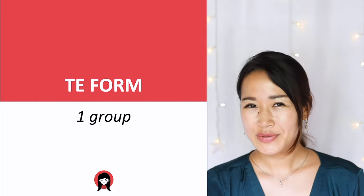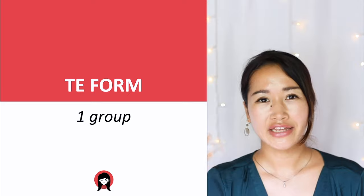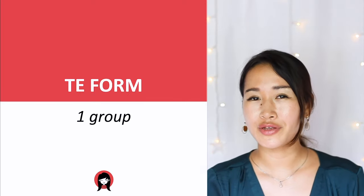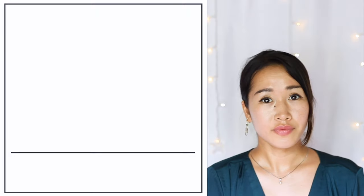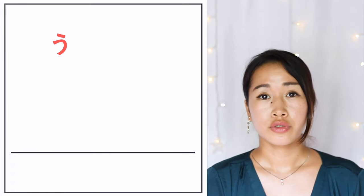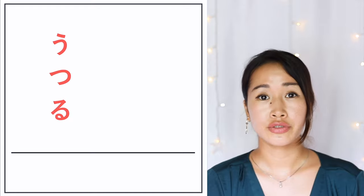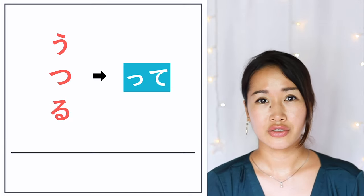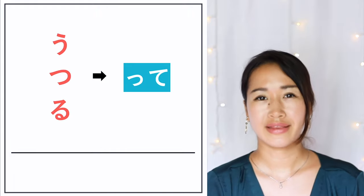I have to say that group 1 is a little bit tricky, but later I will teach a song that helps you remember the conjugation, so please don't worry. So the verbs that end with U, TU, RU change into っTE — small tsu and TE.